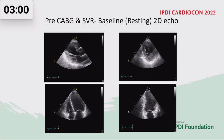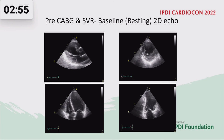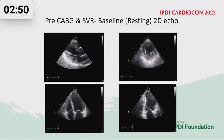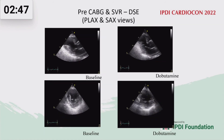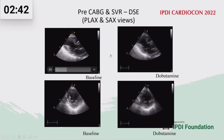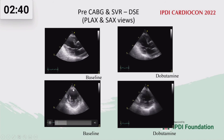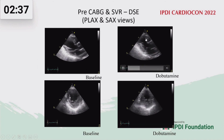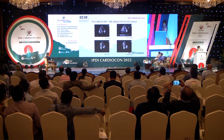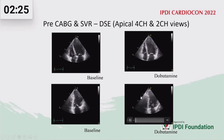In an SVR case example, pre-procedure imaging shows a thin dyskinetic anteroseptum, thin septum and anterior wall, apical wall, and mid-to-apical anterior wall with dilated LV. Intraoperative dobutamine echocardiography confirmed that all segments except the anteroseptum and apical anterior had contractile reserve. Four-chamber and two-chamber views also confirmed non-viable apical septum and mid-to-apical anterior region.